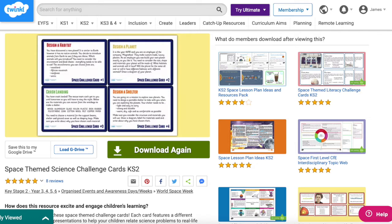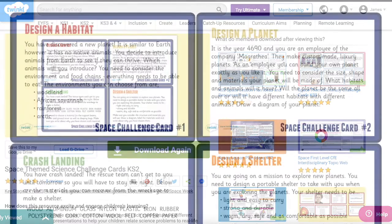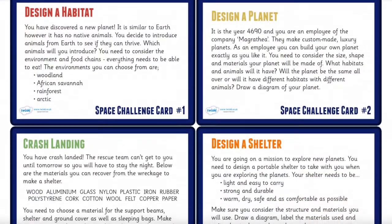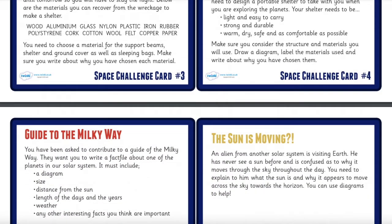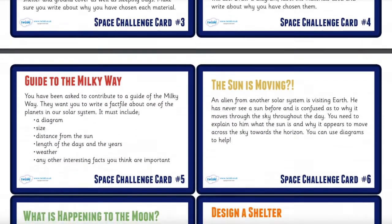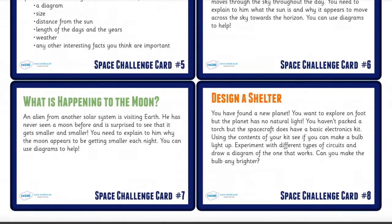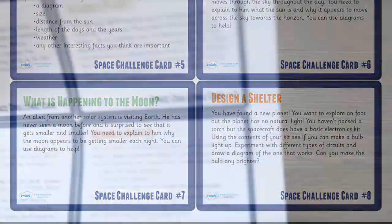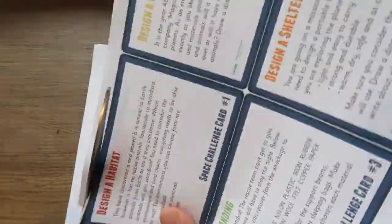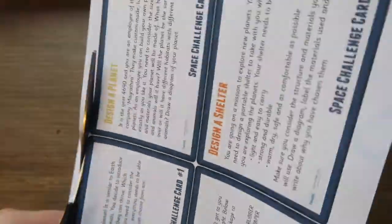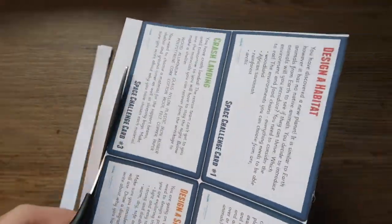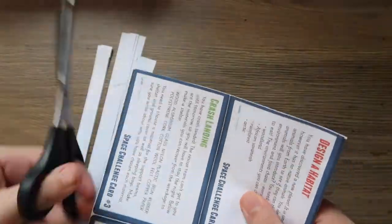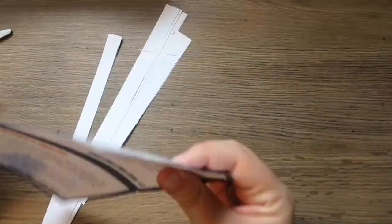The Space-Themed Science Challenge Cards for Key Stage 2 make science fun. Each card features a different challenge with visual representations to help your children relate science problems to real-life scenarios. Why not split the cards up and put the children into small groups? Each group can pick a card and that is their own task for that lesson.